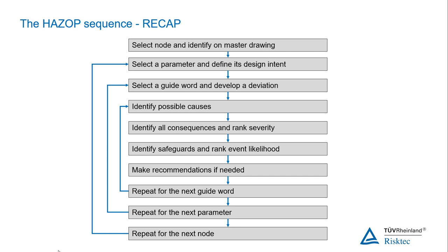The flow chart in this slide shows the process to be followed on a step-by-step basis. For each node, what is the design intent — what's supposed to happen here? Possible deviations from the design intent may occur: do we have more flow, no flow, less flow, and so on?